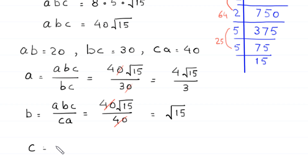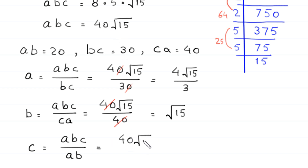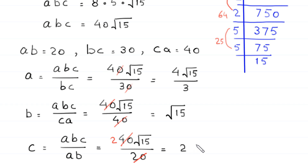Now C is equal to ABC divided by AB. This is equal to 40 times root 15 divided by 20. 40 divided by 20 is 2, so we get the value of C equals 2 times root 15.